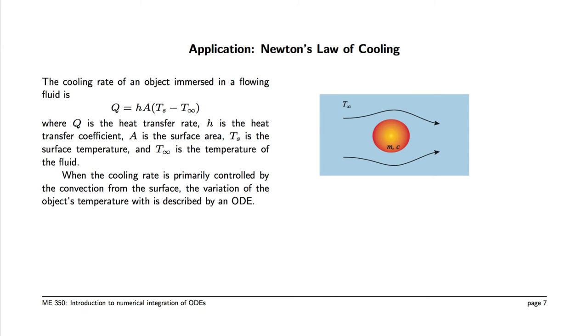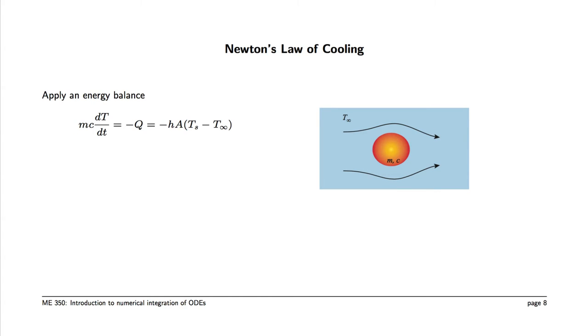When it's primarily controlled by the convection from the surface, we get a particularly simple ordinary differential equation. We start with an energy balance: mc dT/dt is the rate of increase in internal energy, which equals minus Q, because Q is the heat loss.